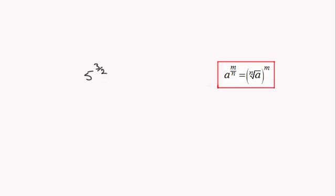In order to express 5 to the power 3 over 2 in the form a root 5, we call upon this rule for indices: a to the power m over n is equal to the nth root of a, all to the power m.